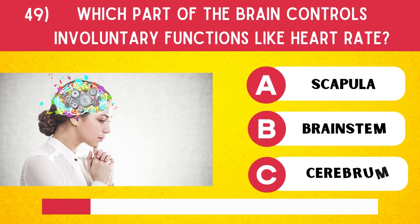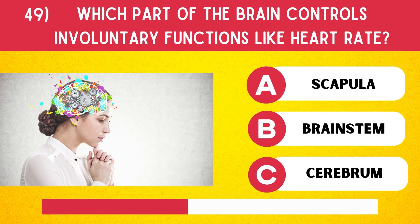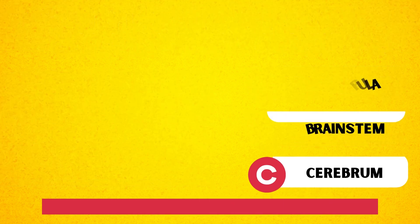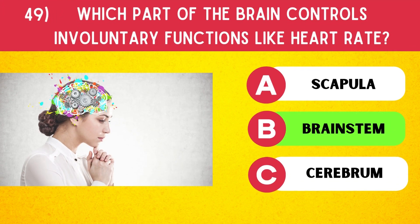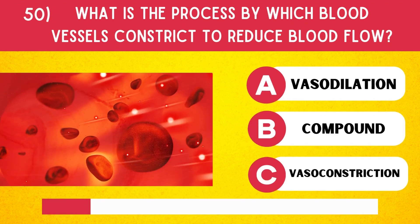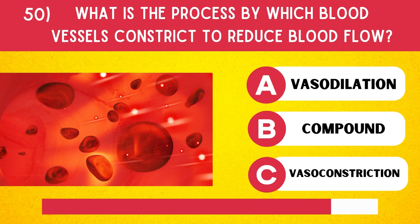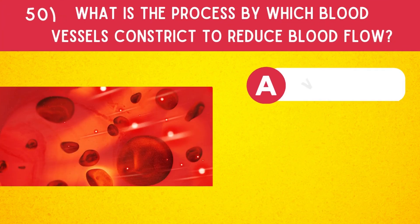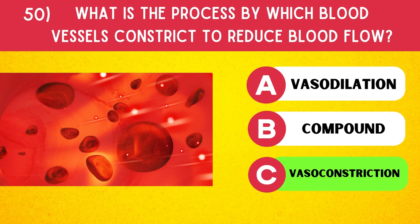Which part of the brain controls involuntary functions like heart rate? Brainstem. What is the process by which blood vessels constrict to reduce blood flow? Vasoconstriction.